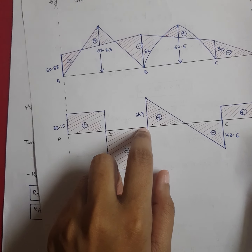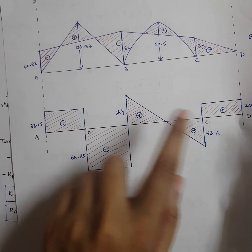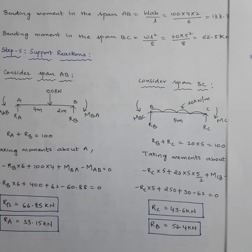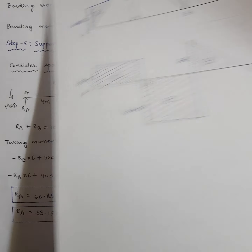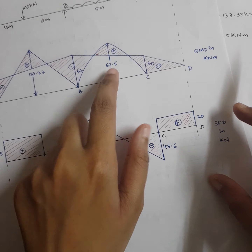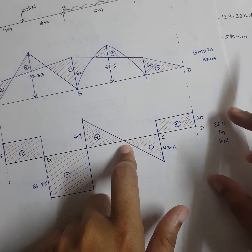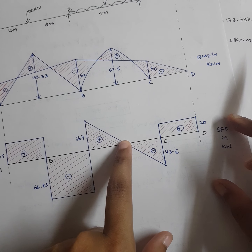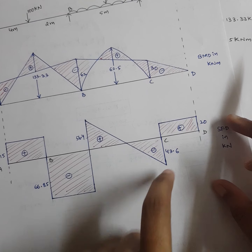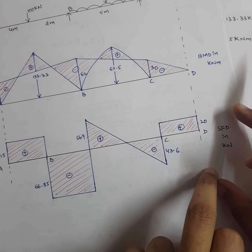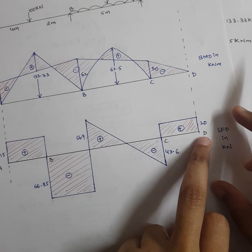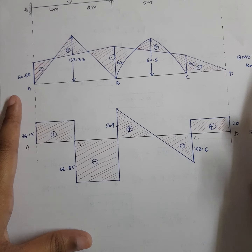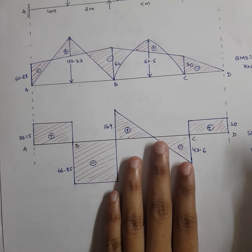After the 100 kN point load, the shear drops by 100, leaving minus 66.85 (which equals R_B from the right). For span BC, R_BC = 56.4 (left side upward, positive) and R_C = 43.6 (right side upward, negative). Since there is a parabolic peak in the BMD, the shear must change sign — join the SFD accordingly. At D, the 20 kN acts downward, which is positive in this convention.